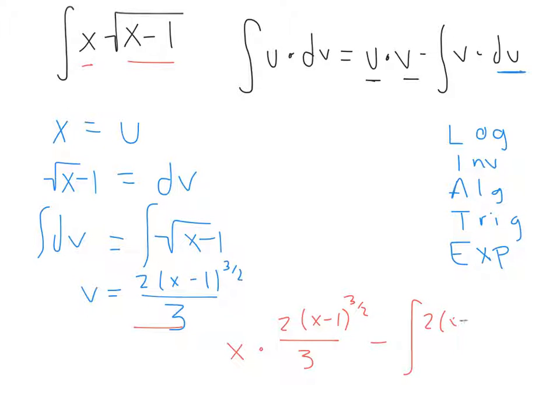minus our integral of v, which we just got. x minus 1 to the 3 halves, times 1. And you don't need to put that in, but I'll put it in so you can see the format showing our formula from above.